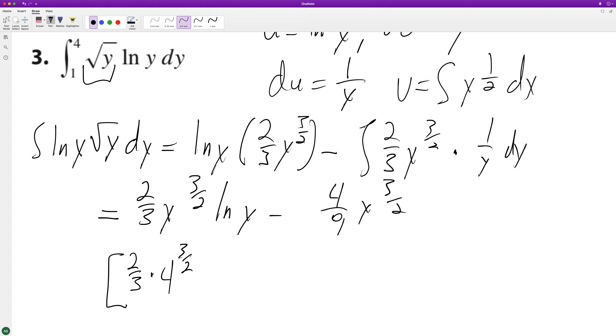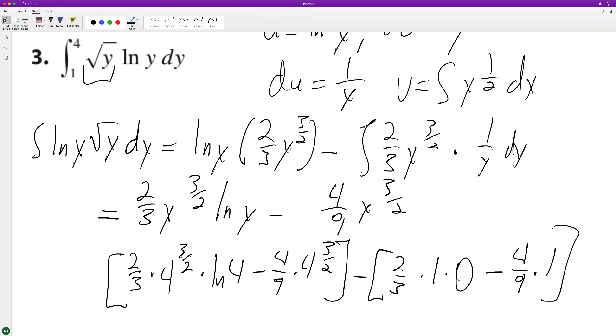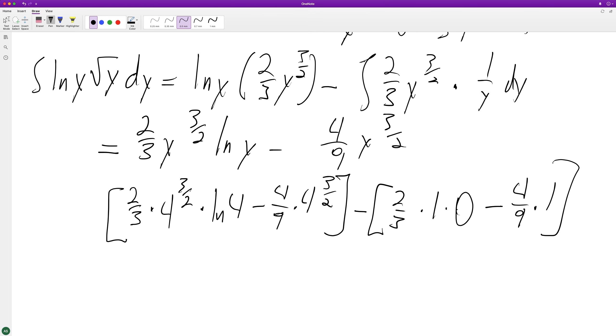We're starting off with four. One raised to anything is just one times natural log of one which is zero. So this is just four over nine. So minus negative four over nine so we end up with...